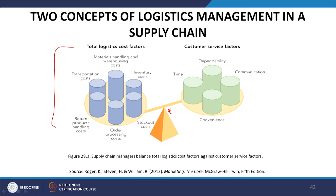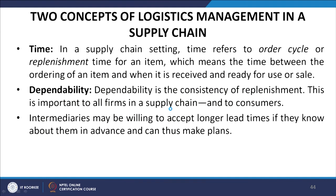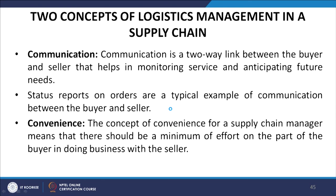Time in the supply chain refers to order cycle or replenishment time — the time between ordering an item and when it is received and ready for use or sale. Dependability is the consistency of replenishments, which is important to all firms in a supply chain and to consumers. Intermediaries may be willing to accept longer lead times if they know about them in advance and can plan accordingly. Communication is a two-way link between buyer and seller that helps in monitoring service and anticipating future needs — status reports on orders are a typical example.